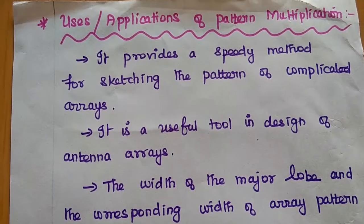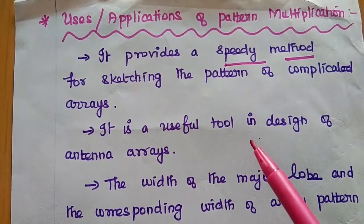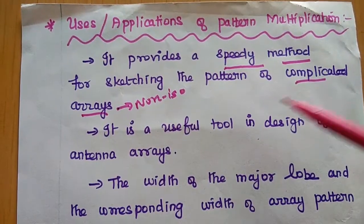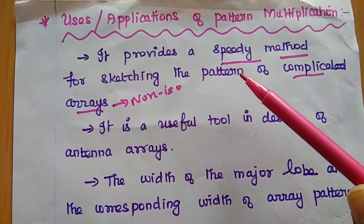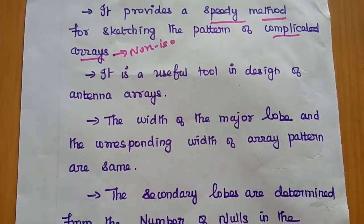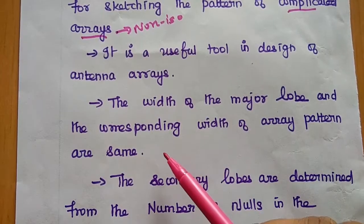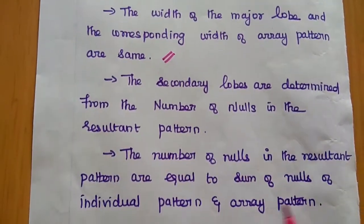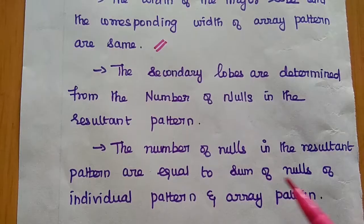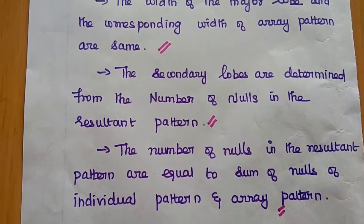Applications of pattern multiplication: First, this method provides a speedy way for sketching the pattern of complicated arrays containing non-isotropic sources. It is a very useful tool in designing antenna arrays. Second, the width of the major lobe and the corresponding width of the array pattern are both the same. Third, the secondary lobes are determined from the number of nulls in the resultant pattern. The number of nulls in the resultant pattern equals the sum of nulls of the individual pattern and the array pattern.